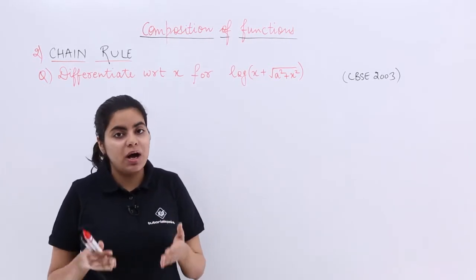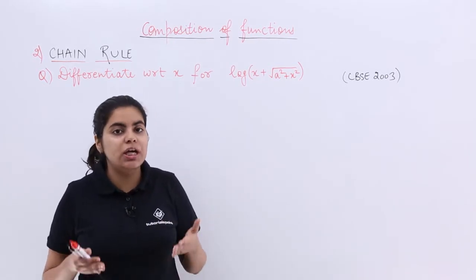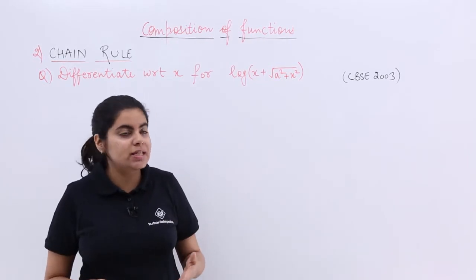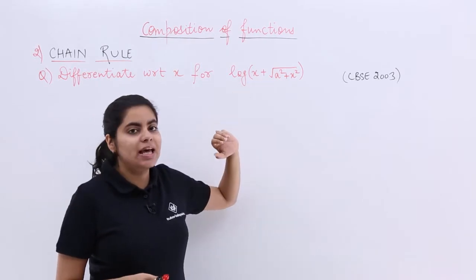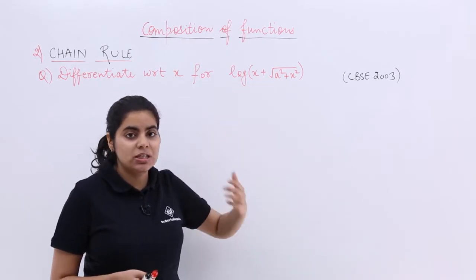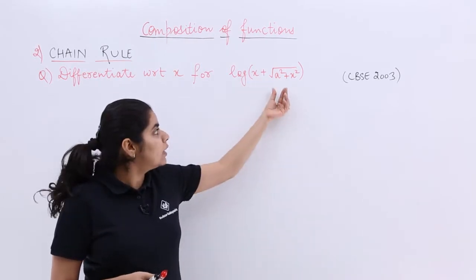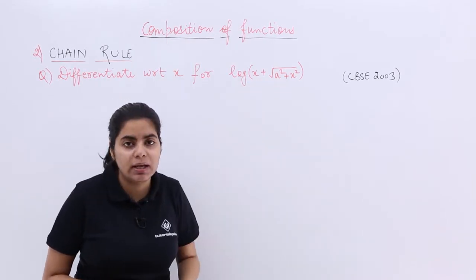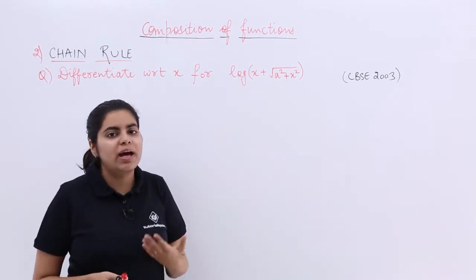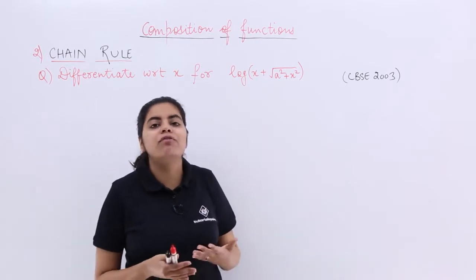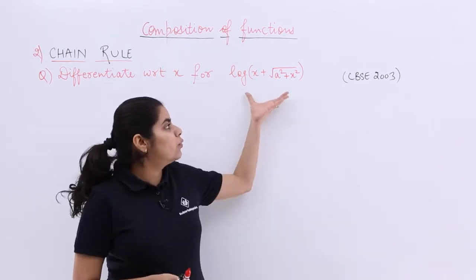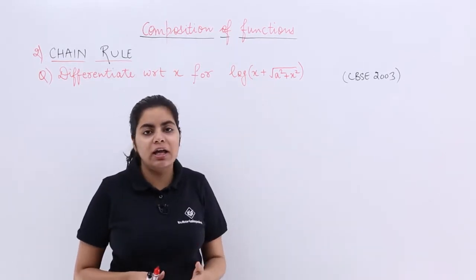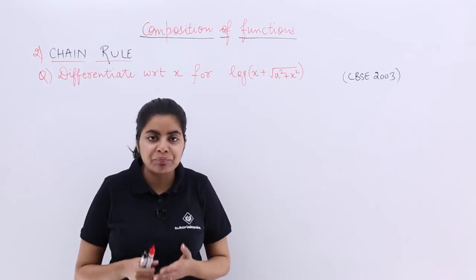When you are asked to differentiate with respect to x, x is the variable under consideration. But what about a²? a² or b² will always be treated as constants because they are nowhere mentioned as variables.